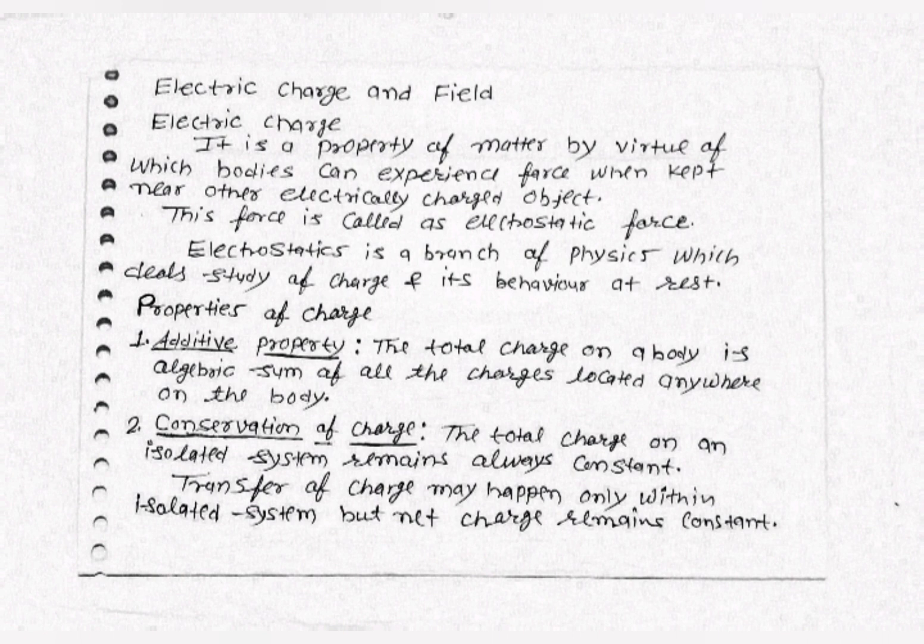Electrostatics is a branch of physics which deals with the study of charge and its behavior at rest. When we say that an object is electrically charged, it may be positive or negative. When an object has an excess of positive charge, it is positively charged — an object loses electrons to become positively charged. Similarly, an object gains electrons to become negatively charged.